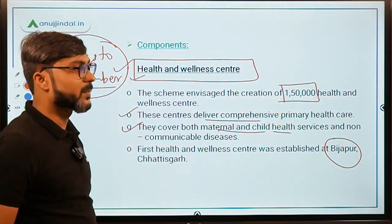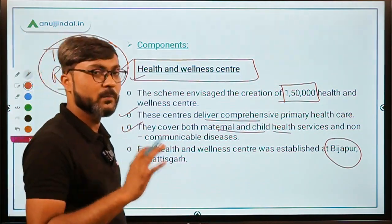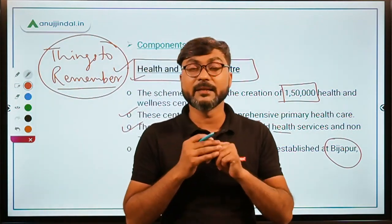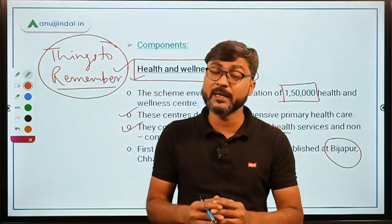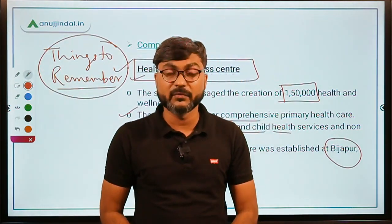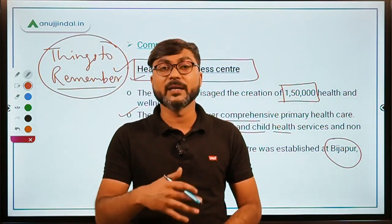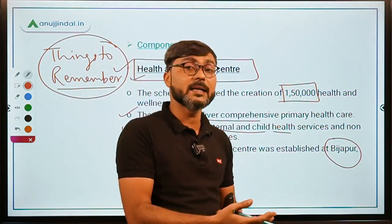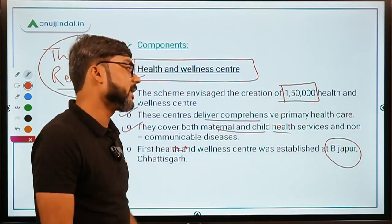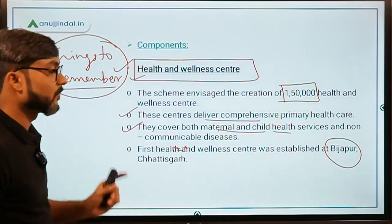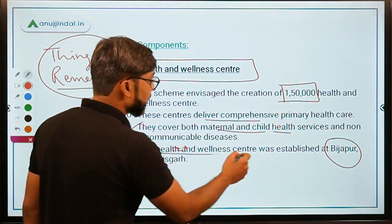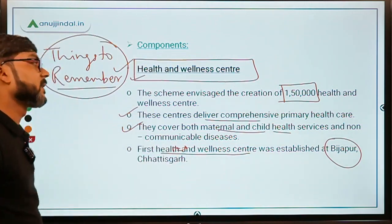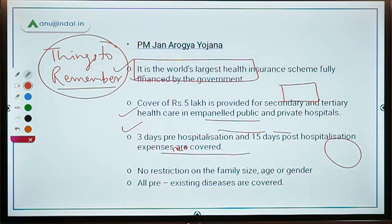The first Health and Wellness Center under this scheme was established at Bijapur in Chhattisgarh. These centers provide primary healthcare services including maternal and child health and non-communicable diseases.